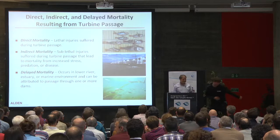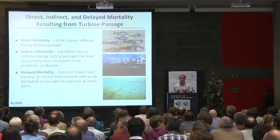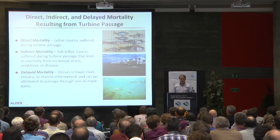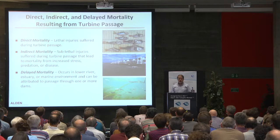To start, there are three mortality types that we need to be aware of. The first is direct mortality — that is when a fish goes through the turbine, it suffers a lethal injury and pretty much immediate mortality.